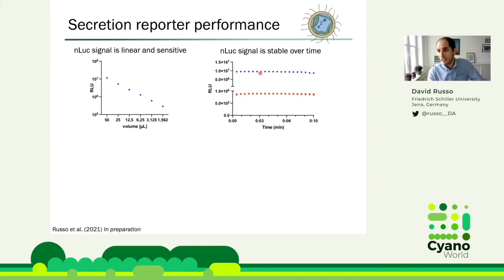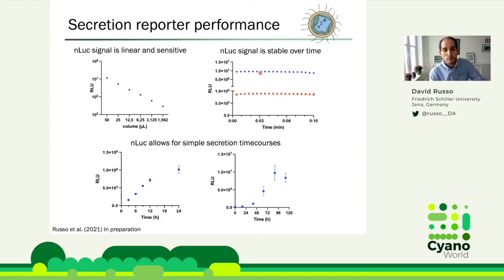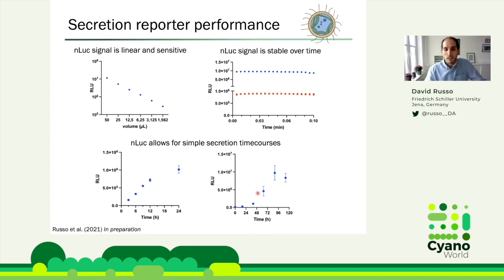We can use this for simple secretion time courses — just take a small sample from your culture and measure every couple of hours. Sampling every three hours, you can see the protein accumulating in the medium in a stepwise fashion at three, six, nine, twelve, and twenty-four hours. Sampling daily over a week, not standardized to cell number, the accumulation roughly follows a growth curve — more cells, more secretion. It's a really sensitive reporter and it works very well.